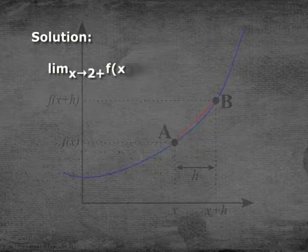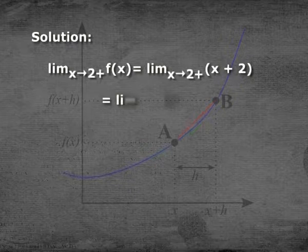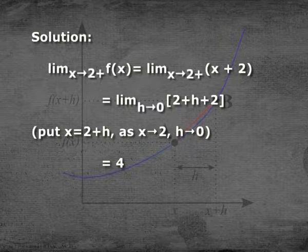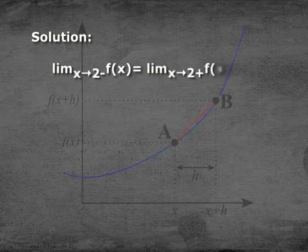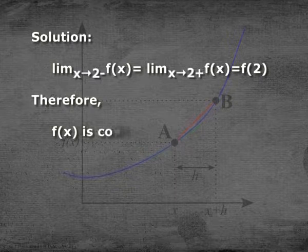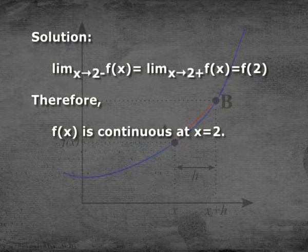The right-hand limit: limit x→2⁺ of f(x) = limit x→2⁺ of (x + 2) = limit h→0 of (2 + h + 2) = 4. So we find that limit x→2⁻ of f(x) = limit x→2⁺ of f(x) = f(2). Therefore, f(x) is continuous at x = 2.